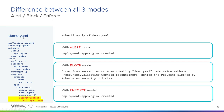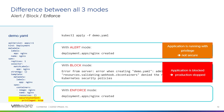Imagine you want to deploy a demo application with privilege. With alert mode, you will have an alert but the application will run with privilege, so it's not secure. If you use block mode, the application will be blocked — it will not run, and production stops. With enforce mode, the application will run but without privilege, so it is secure.